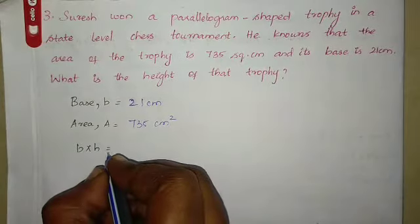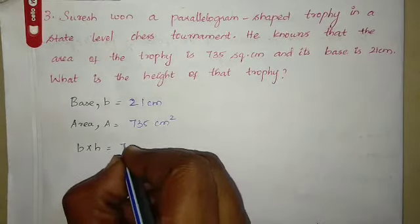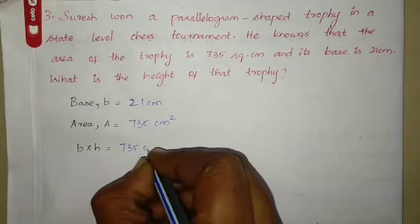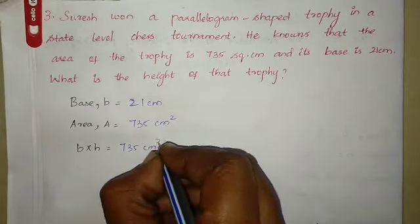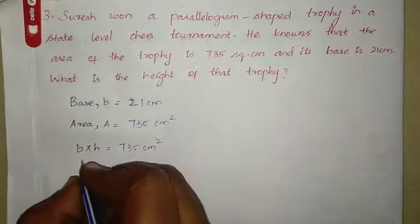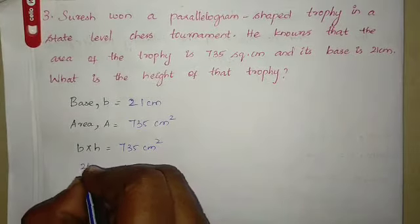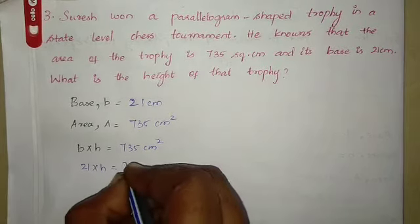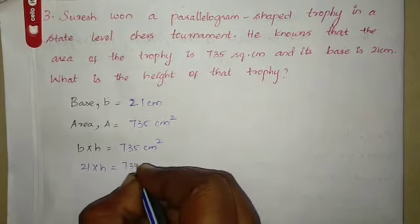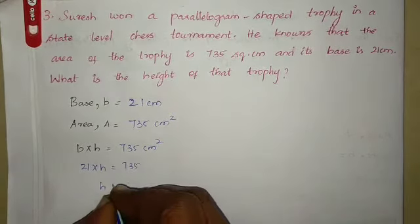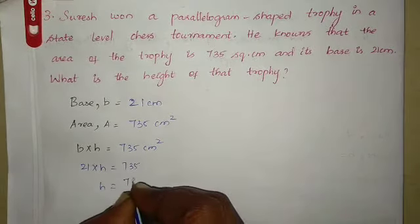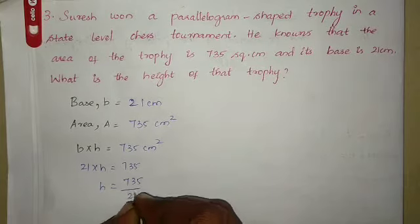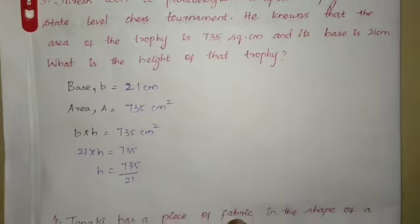Base into height is equals to area 735 centimetre square. Base vann 21 into H is equals to 735. So H is equals to 735 divided by 21.